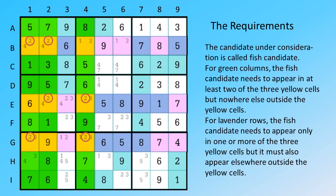The candidate under consideration is called fish candidate. For green columns, the fish candidate needs to appear in at least two of the three yellow cells, but nowhere else outside the yellow cells.